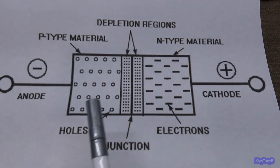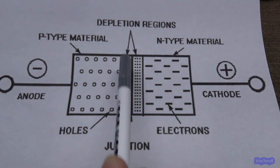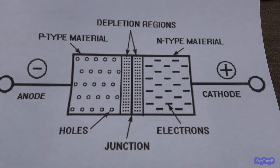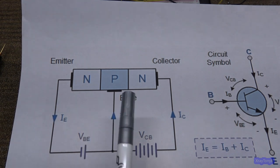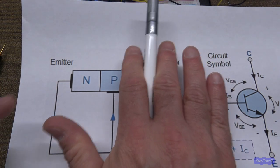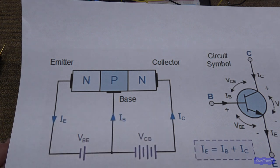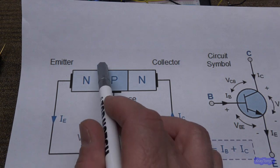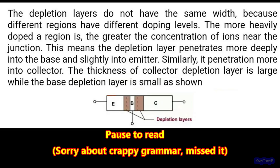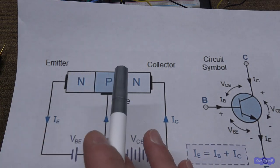What if we were able to put another element in between this junction so that we could control the depletion regions — turn them on and off from an external source, rather than just relying on the charge across the whole element? Well, that's exactly what a transistor is. If I take an N and P element like a diode and fuse another N element on the outside, I essentially have a transistor with two sets of depletion regions. The way you dope these regions differently from one another — that difference is the magic that makes this thing work.